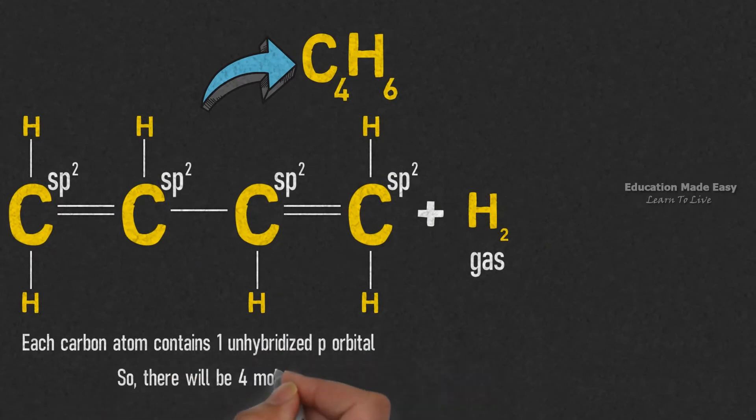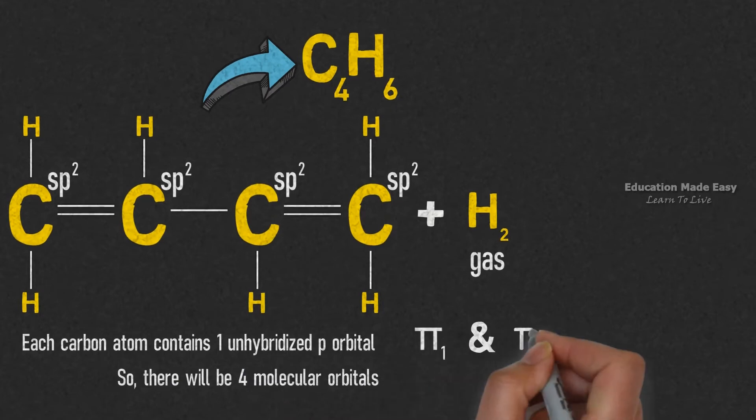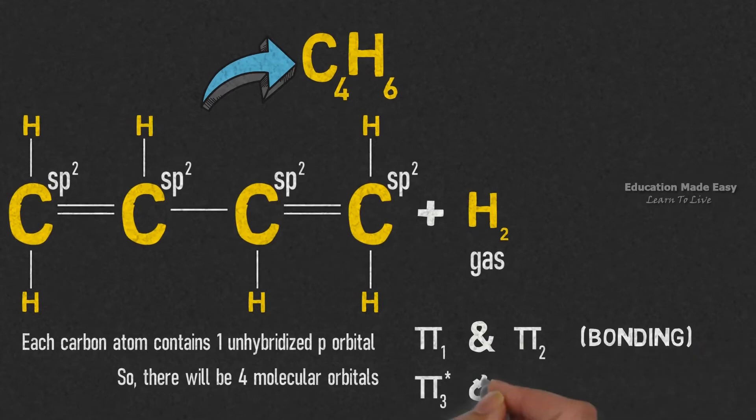There will be four molecular orbitals: pi1, pi2, pi3, and pi4. Here pi1 and pi2 are bonding molecular orbitals, whereas pi3 and pi4 are antibonding molecular orbitals.